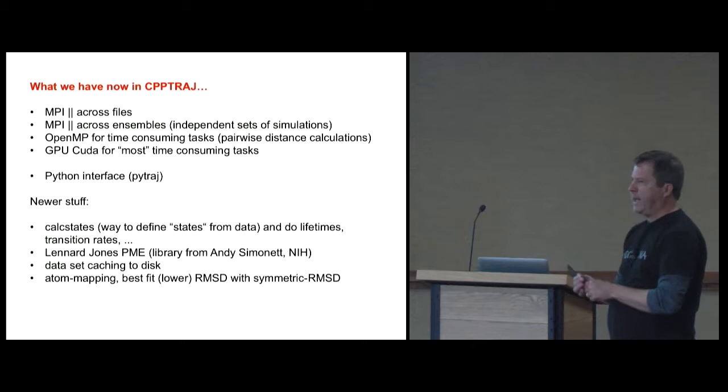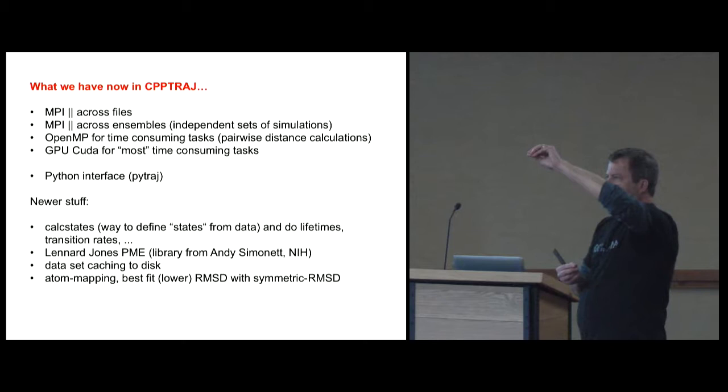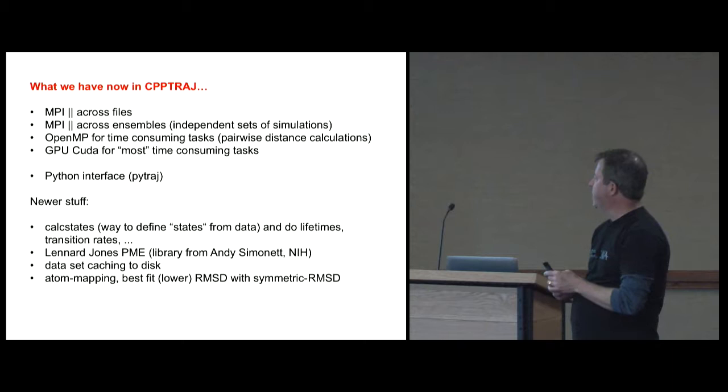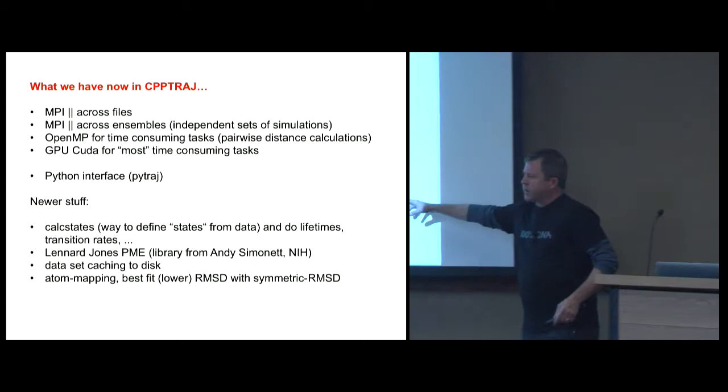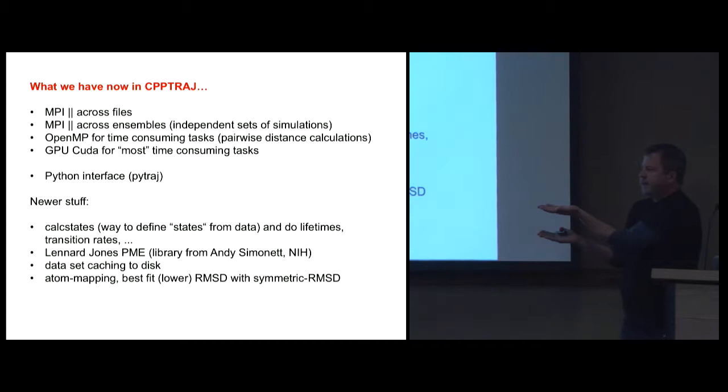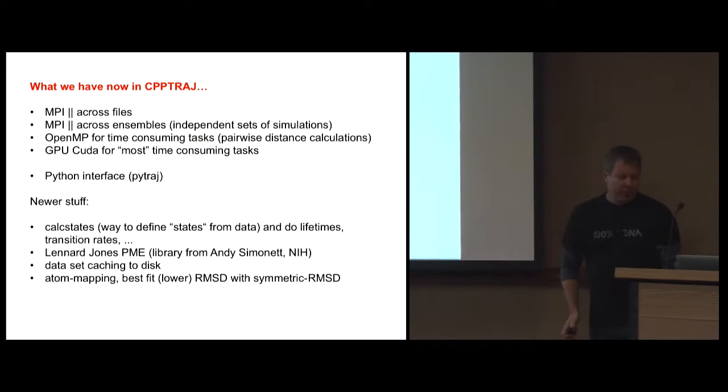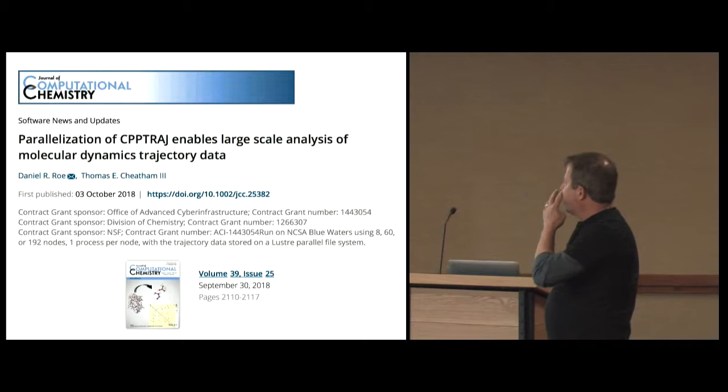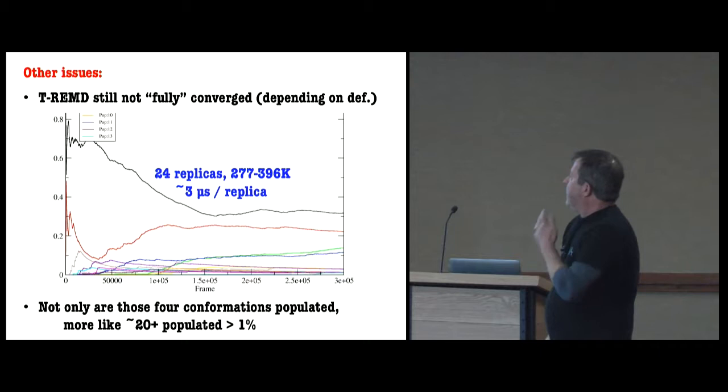We've got Lennard-Jones PME in there for energetic analysis. We've got a way to define states. Like if you were doing a membrane simulation, you could say the drug is outside the membrane, it's on the membrane, it's in the membrane, and then you can calculate lifetimes and probabilities and so forth, which is really kind of cool. Another thing that's not seen in many analysis codes is we can do what's called the symmetric RMSD. So if you imagine protein simulation, your phenylalanine flips, it now looks like a different atom order when you compare them. This corrects for that automatically to get the lowest RMSD. Paper on the parallelization of CPPTRAJ was finally published in 2018.